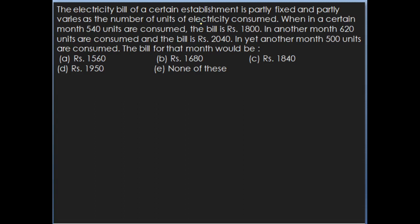The next question: the electricity bill of a certain establishment is partly fixed and partly varies as the number of units of electricity consumed. When in a certain month 540 units are consumed, the bill is Rs. 1800. In another month, 620 units are consumed and the bill is Rs. 2040.